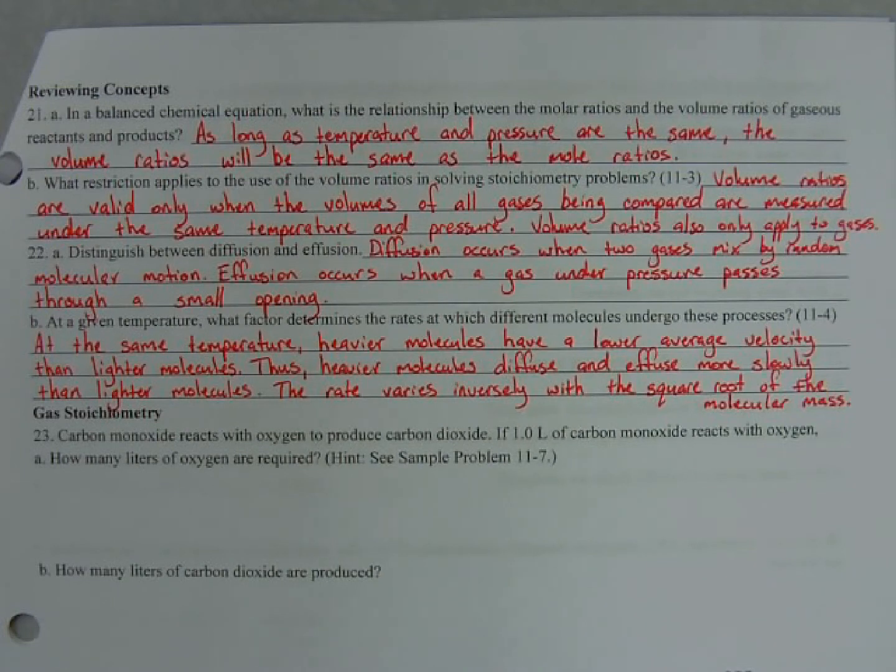So a balanced chemical equation. We're talking about stoichiometry here. And what we find is that they are the same. It's even more than direct. As long as temperature and pressure are the same, remember that was always the prerequisite or the restriction of Gay-Lussac's Law of Combining Volumes and Avogadro's Law is that temperature and pressure have to be the same.